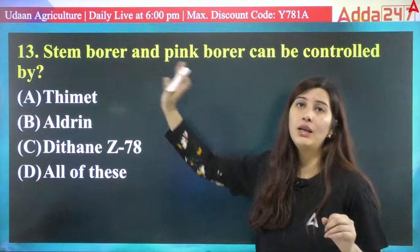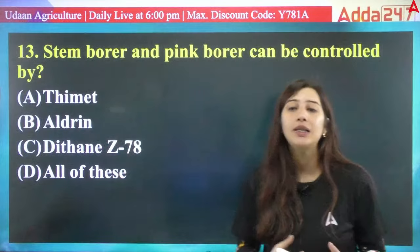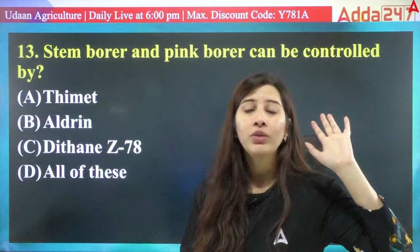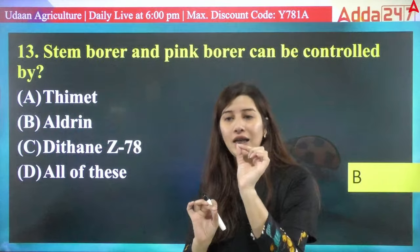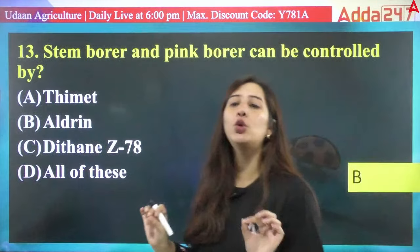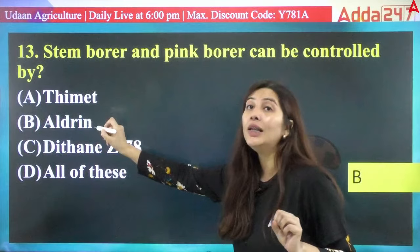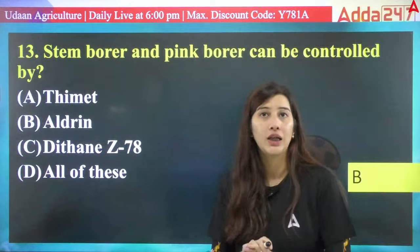Stem borer and pink borer can be controlled by — options: Thimet, Eldrin, Dithane Z-78, or all of these. Don't automatically choose 'all of these' — the question asks which is most effective. The answer is B — Eldrin. Pink borer is a nocturnal moth, and Eldrin belongs to the organochlorine class, making it the most effective insecticide for borers.